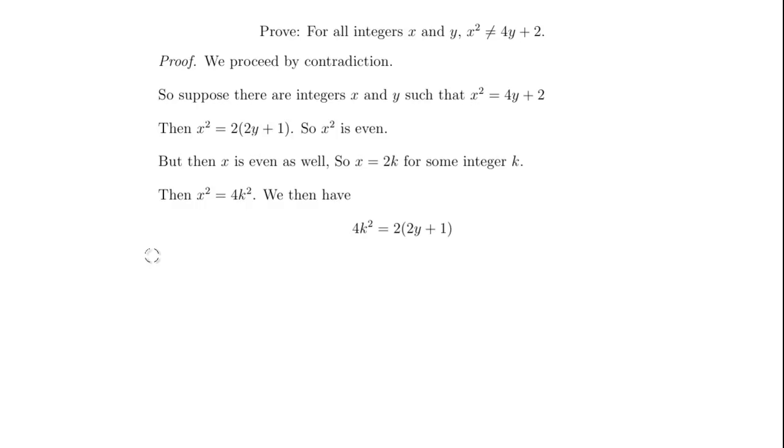Well notice both sides are divisible by 2 so we can divide both sides by 2 so we get 2k squared is equal to 2y plus 1.